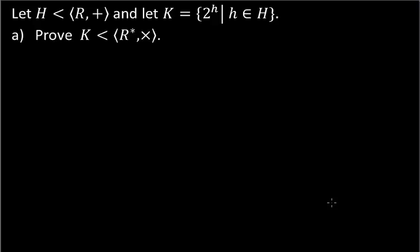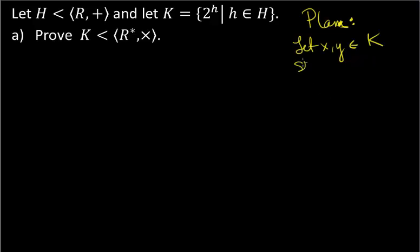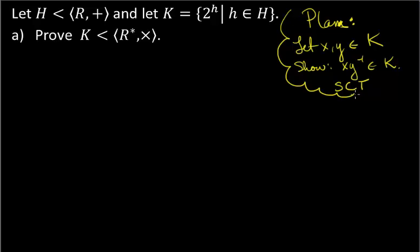So just have a plan — don't worry that you don't quite see what that set K is using exponents from a subgroup, just write out the plan. We're going to let X and Y be in K, and we hope to show that XY inverse is in K, and then we'll be done. We're going to use the subgroup criterion test.